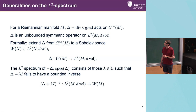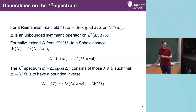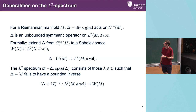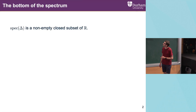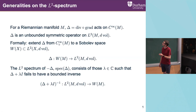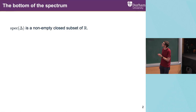We'll be looking at the spectrum of the negative of the Laplacian. This is what we'll call the L2 spectrum, and we'll denote it as spec of delta — those are complex numbers such that delta plus lambda times the identity fails to have a bounded inverse mapping from L2 back to the Sobolev space. Since the Laplacian is symmetric, the spectrum will be a subset of R, and from general theory it's non-empty and closed.